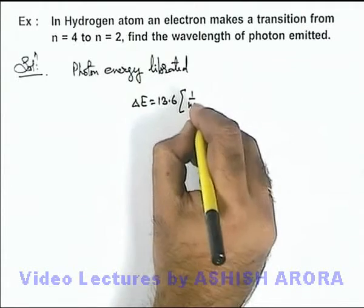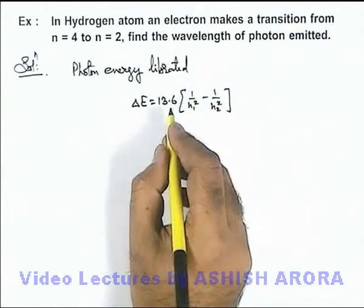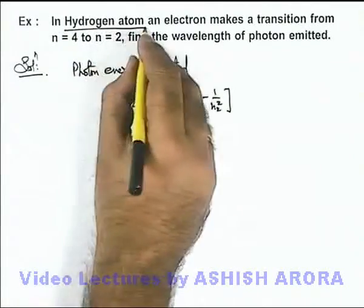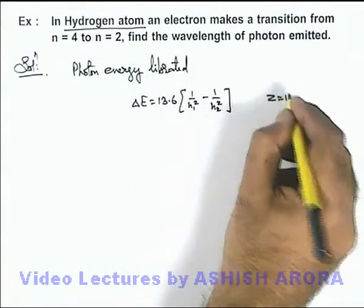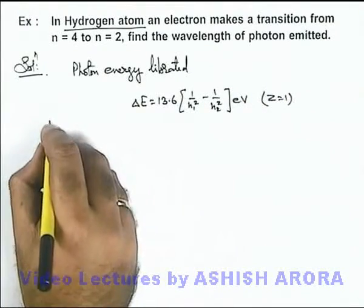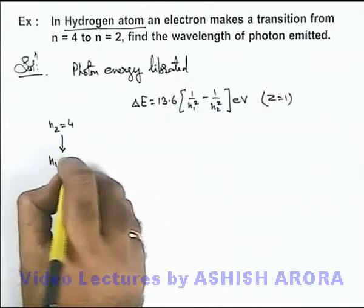[1/n₁² - 1/n₂²] eV. The actual relation includes 13.6 Z², but as we are using hydrogen atom, Z = 1. This is in electron volts, and here the transition is from n₂ = 4 to n₁ = 2.